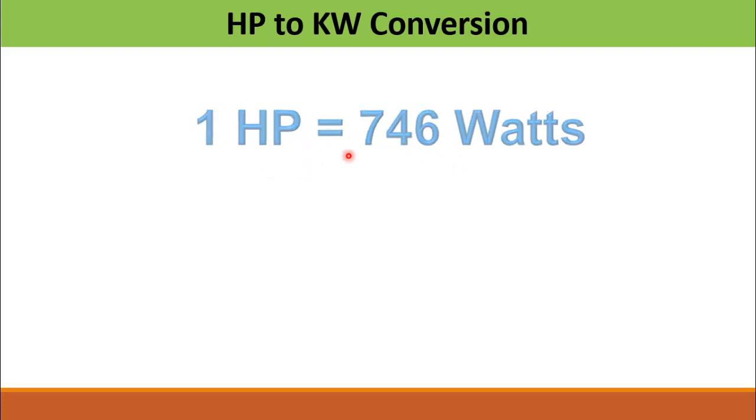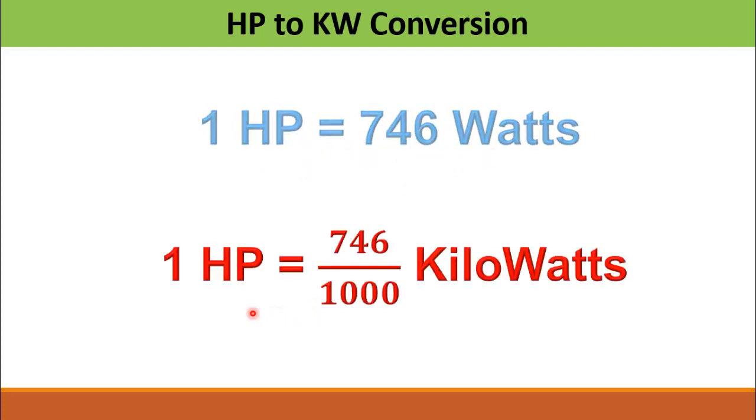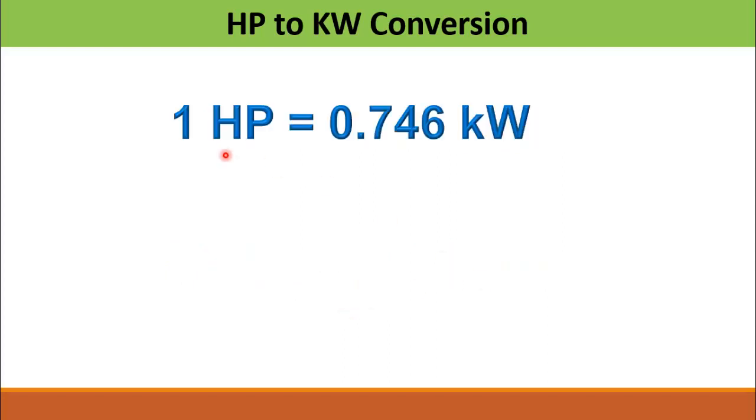One horsepower is equal to 746 watts and the relation of horsepower with the kilowatts is one horsepower is equal to 746 divided by 1000 kilowatts, or you can say one horsepower is equal to 0.746 kilowatt.